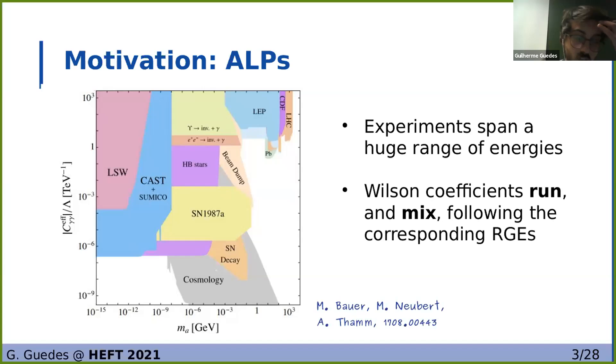So we see that we have a very different range of energies in our bounds, and so to correctly interpret them in terms of a UV completion of UV couplings, it's important to know how these Wilson coefficients run and mix among themselves, which follows from the renormalization group equations, which is what we want to calculate.